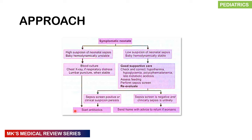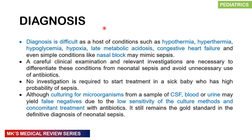If there is low suspicion and the baby is hemodynamically stable, correct any hypothermia, hypoglycemia, polycythemia, anemia, or late metabolic acidosis, assess feeding, perform a sepsis screen, then re-evaluate. If the screen is positive or clinical suspicion persists, start antibiotics. If negative and clinical sepsis is unlikely, send home with advice to return if the child doesn't improve. The diagnosis of sepsis is difficult — it mimics hypothermia, hyperthermia, hypoglycemia, hypoxia, late metabolic acidosis, congestive heart failure, and even nasal blockage.